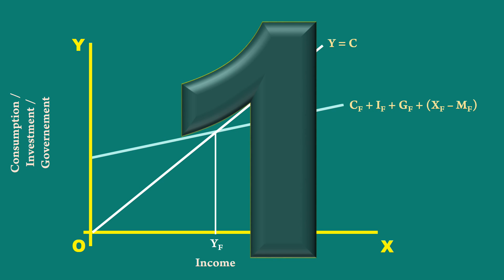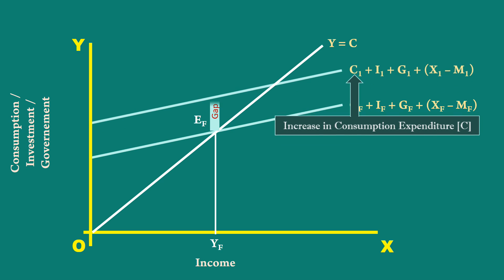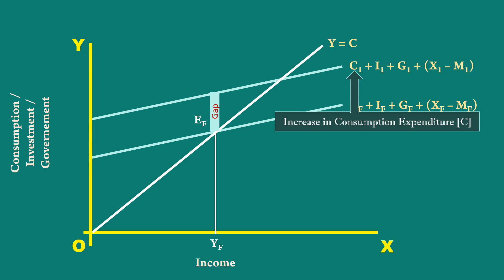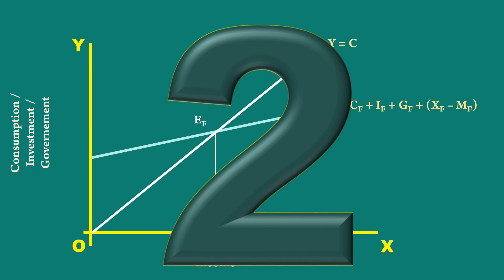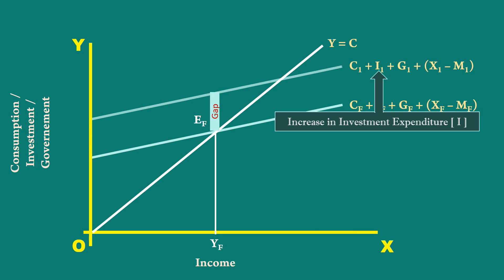1. An increase in consumption expenditure pushes the aggregate demand curve up. Since the economy is in full employment equilibrium, the output cannot be expanded. 2. An increase in investment spending by the business community also will make the curve to move up.